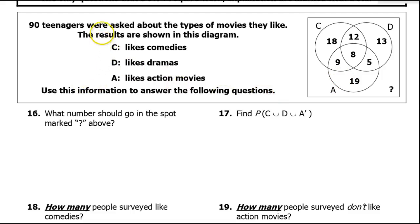Looking at the first set of problems, we have 90 teenagers asked about the types of movies they like: comedies, dramas, and action movies. We have the information here in a Venn diagram. First of all, what number should go in the question mark position right here?